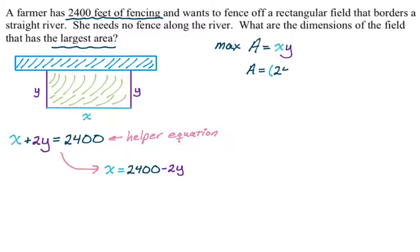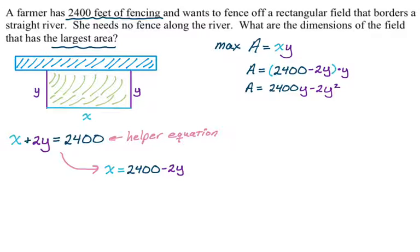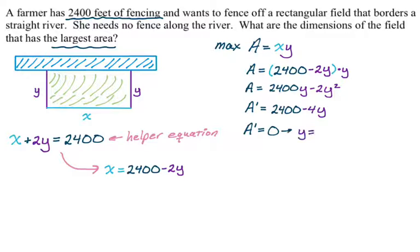The area is (2400 minus 2y) times y — I substituted for x using the helper equation. Now it's just a straightforward derivative. We're trying to optimize, so we take the first derivative. Expanding and differentiating with respect to y gives 2400 minus 4y. Setting that equal to 0, you can see that y equals 600.